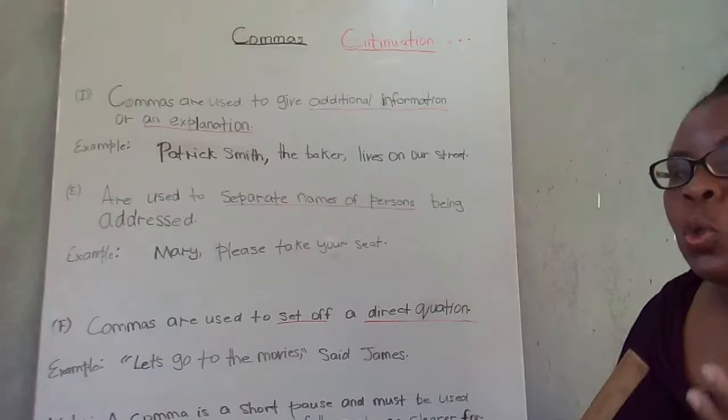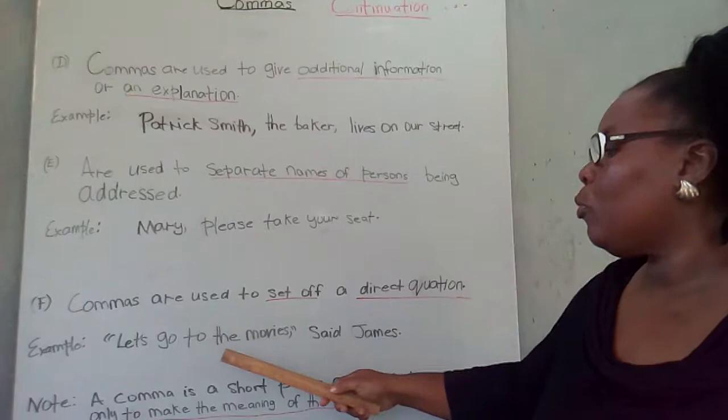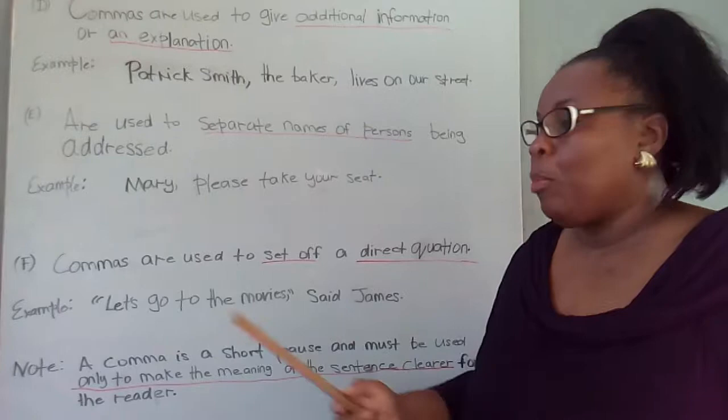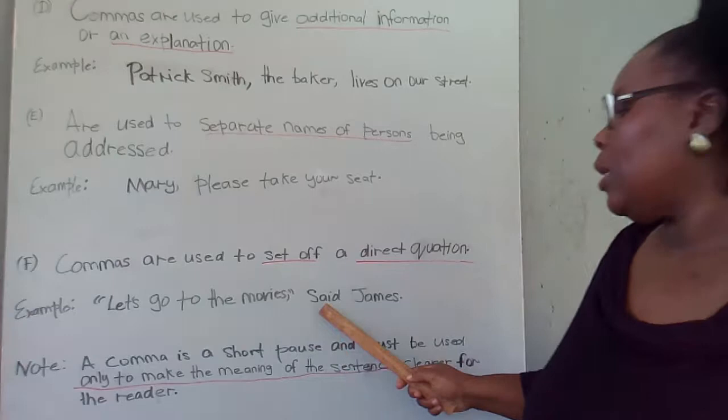So James is the person who has spoken — that we should go to the movies. He said, "Let's go to the movies." The apostrophe S means "let us," so it's saying "let us go to the movies, said James."